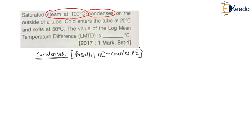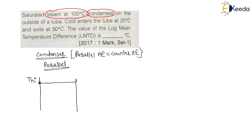Let us draw the diagram considering parallel flow — you can consider counter flow as well. For a parallel flow heat exchanger, the entry of cold and hot fluid is on the same side. The hot fluid enters from the left side at temperature T_HI. Since there is a phase change of the hot fluid (steam), T_HI equals T_HO equals 100 degrees Celsius.